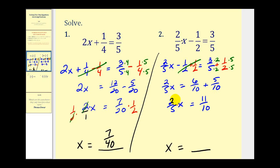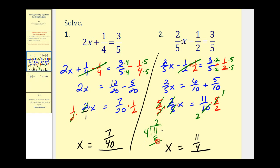The 2/5 is attached by multiplication, but instead of dividing by 2/5, we'll multiply by the reciprocal — so we multiply both sides by 5/2. The left side simplifies perfectly, leaving us with x. On the right side, the 5 and the 10 simplify to give us 11/4. This is correct and in simplest form, but it is an improper fraction. We can convert it to a mixed number: 11 divided by 4 goes 2 times with a remainder of 3, so 11/4 is equivalent to 2 and 3/4. Either answer is correct.